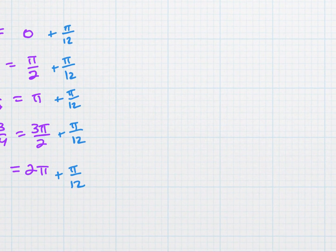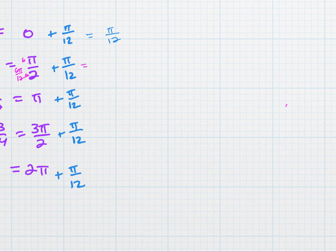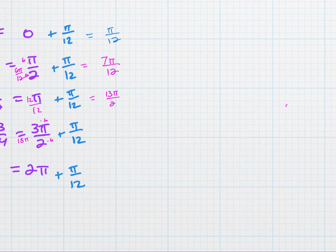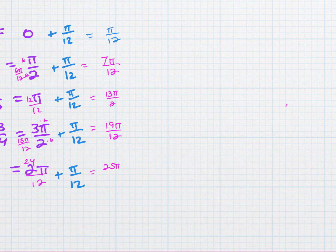That means I'm going to add the phase shift on to each of these points. To the first one, it is just that phase shift because we're adding it to zero. For the second one, we change so that they have the same denominator — times six and six — six pi over 12, seven pi over 12. This becomes 12 pi over 12, so 13 pi over 12. Six and six: 18 pi over 12, 19 pi over 12. And then 24 pi over 12, 25 pi over 12.